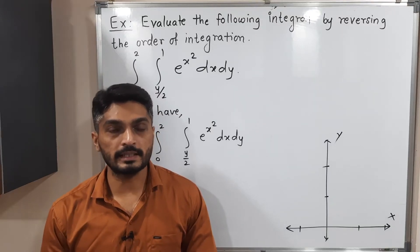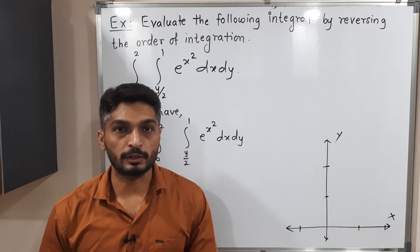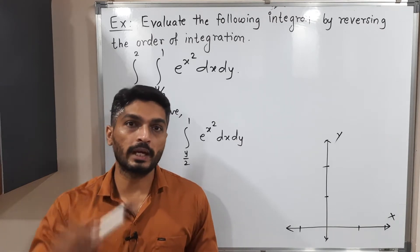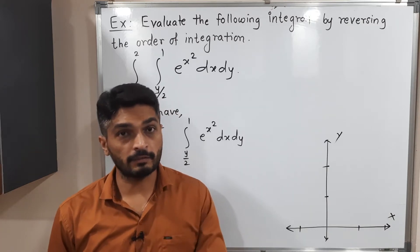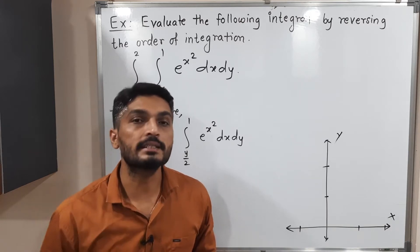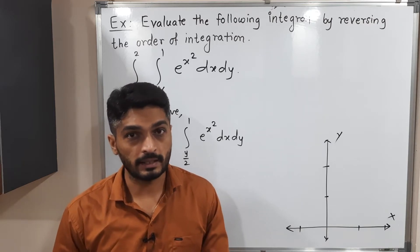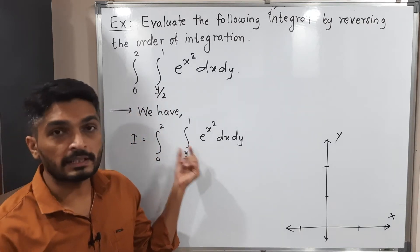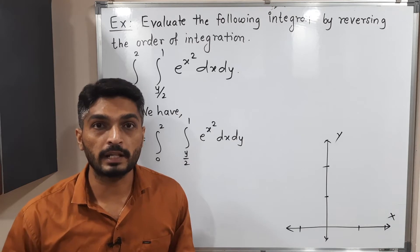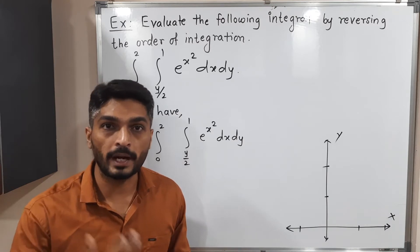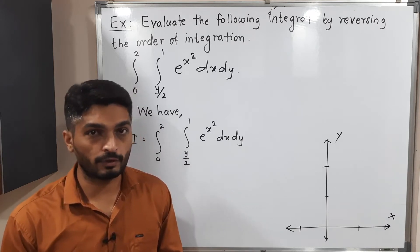Let us discuss this example. We have to find the value of the double integral by reversing the order of integration. That means if the original strip is parallel to the x-axis, we will rotate it and consider a strip parallel to the y-axis. And if the original strip is parallel to the y-axis, we consider a strip parallel to the x-axis. In other words, if we have the inner integration with respect to x and outer integration with respect to y, by changing the order of integration, we will have inner integration with respect to y and outer with respect to x. So let us first find the region of integration, then we will change the order of integration.